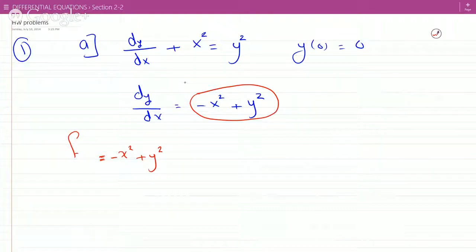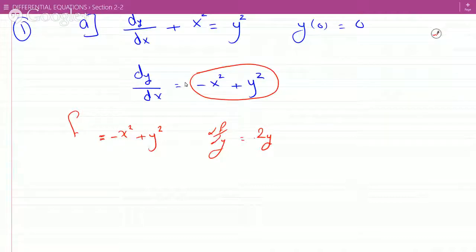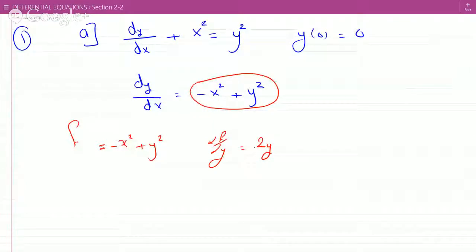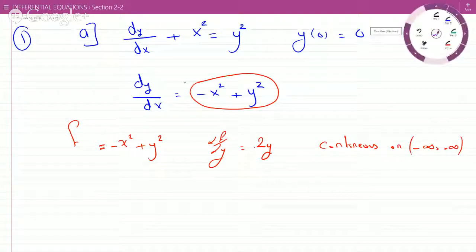And what's df over dy? 2y. So the existence and uniqueness theorem says that if f and its first derivative are continuous on some open interval, well in this case, those are continuous everywhere. So this is continuous on minus infinity to plus infinity, just because there are no restrictions.